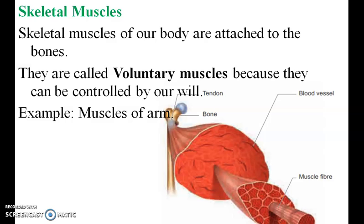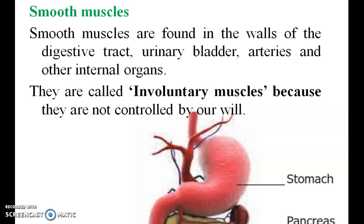The skeletal muscles of our body are attached to the bones. They are called voluntary muscles because they can be controlled by our will. An example is the muscles of the arm. Smooth muscles are found in the walls of the digestive tract, urinary bladder, arteries and other internal organs. They are called involuntary muscles because they cannot be controlled by our will.